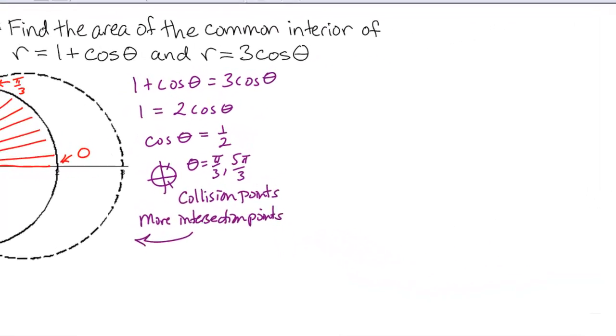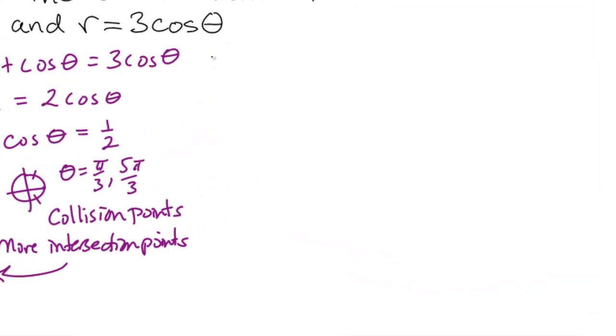Let's write out our plan. So in this example, we're going to find the area to be 2 times the area of 1 plus cosine theta as theta goes from 0 to pi over 3. Then we need to add the area of 3 cosine theta as theta goes from pi over 3 to pi over 2.